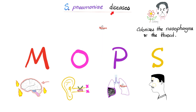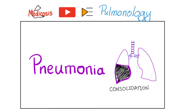What are the diseases caused by Streptococcus pneumoniae? Just remember MOPS: M — meningitis, O — otitis media, P — pneumonia, and S — sinusitis. Don't forget that normally, strep pneumo is present in many people's throat and nasopharynx. There is a separate video on pneumonia in the pulmonology playlist.